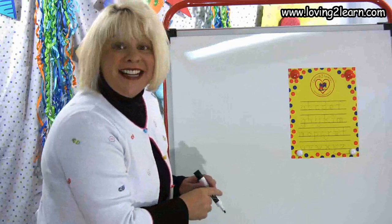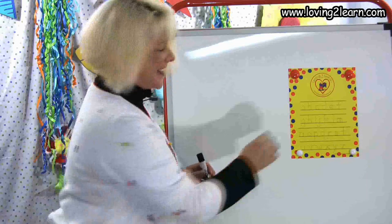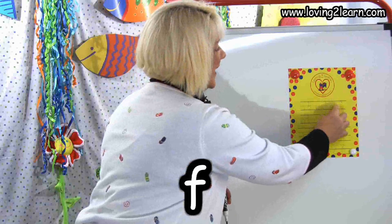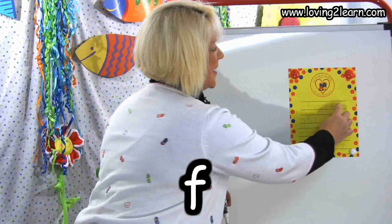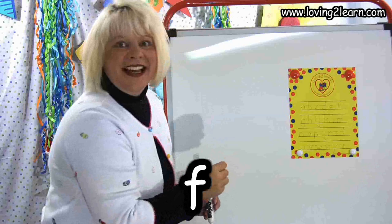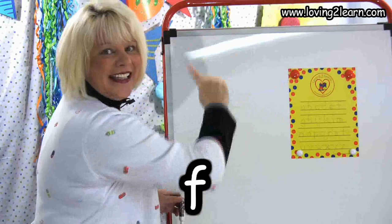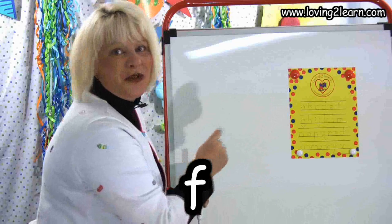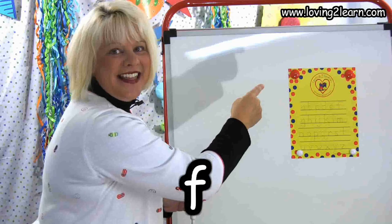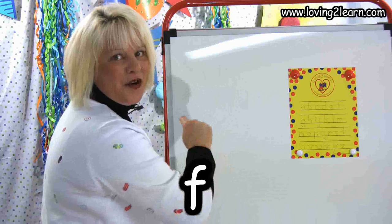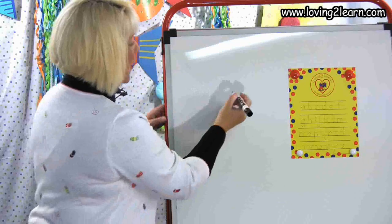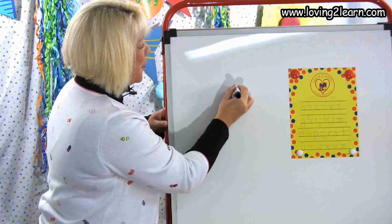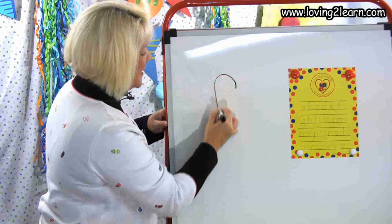The next letter is the letter F. Here we go: candy cane down, cross in the middle. Do it with me again: candy cane down, cross in the middle. Let's do it again in the air: candy cane down, cross in the middle.